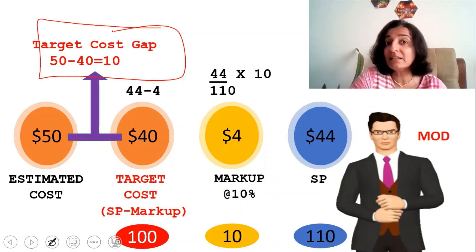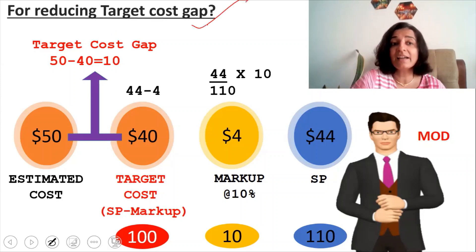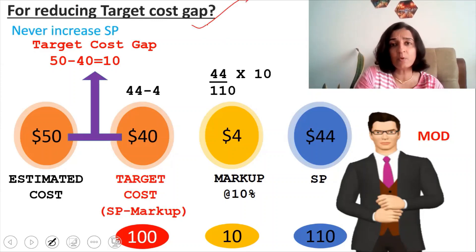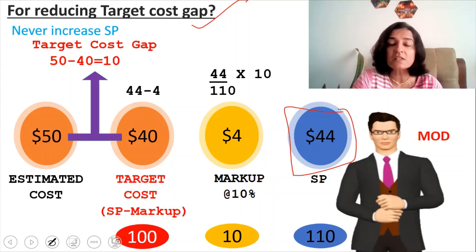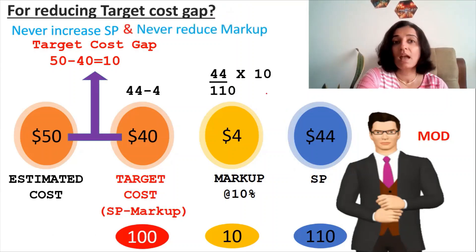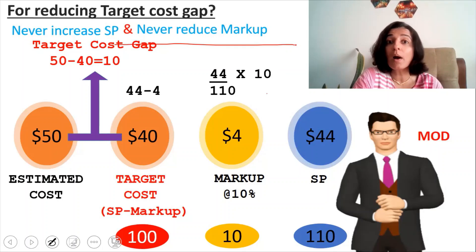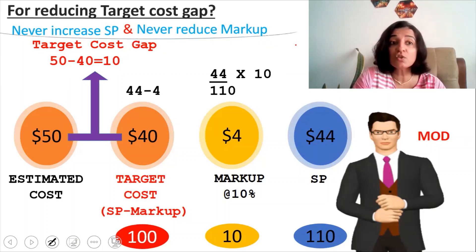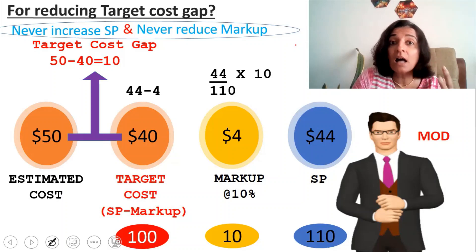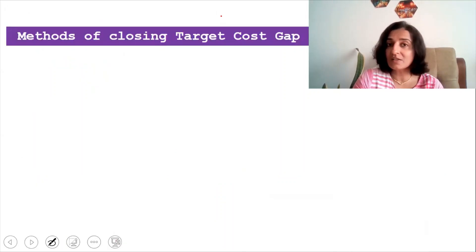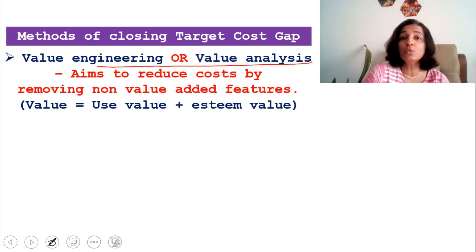Now we will see the various methods to reduce the target cost gap. For reducing the target cost gap, we can never increase the selling price, because the selling price is fixed by the market — if we increase it, customers will go to our competitor. And we cannot reduce the markup either, because our shareholders will be unhappy. So the methods of closing the target cost gap include value engineering or value analysis, which aims to reduce cost by removing non-value-added features.